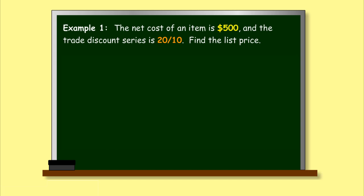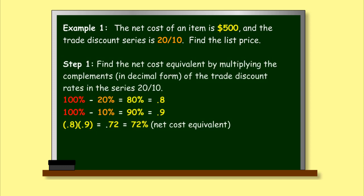Example 1. The net cost of an item is $500 and the trade discount series is 20 over 10. Find the list price. Step 1. Find the net cost equivalent by multiplying the complements in decimal form of the trade discount rates in the series 20 over 10.